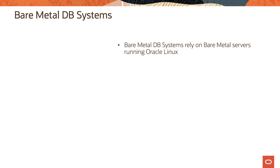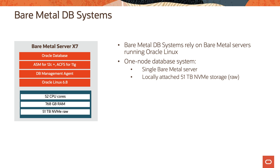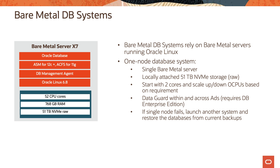Let's now look at the bare metal DB systems. Bare metal DB systems rely on bare metal servers running Oracle Linux. It's a one-node database system which runs on a single bare metal server and has locally attached 51 terabyte NVMe storage. You start with two cores and you can scale up or down OCPUs based on requirement. For a bare metal server X7 shape, you have 52 CPU cores available with 768 gigabytes of RAM. If you're running Database Enterprise Edition, you can use Data Guard within and across availability domains. If a single node fails, you'll have to launch another system and restore the databases from current backups.